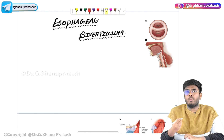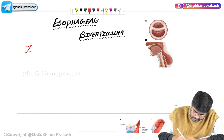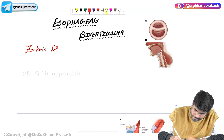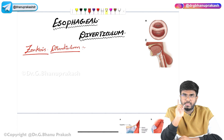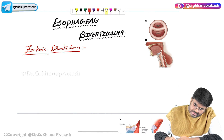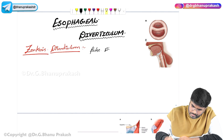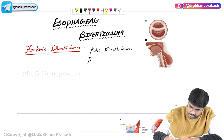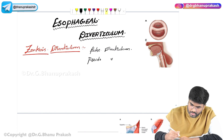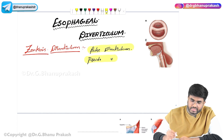The first esophageal diverticulum I'm going to discuss is called Zenker's diverticulum. What are the important points you need to know? Number one: it is an example of a false diverticulum or pseudo diverticulum.